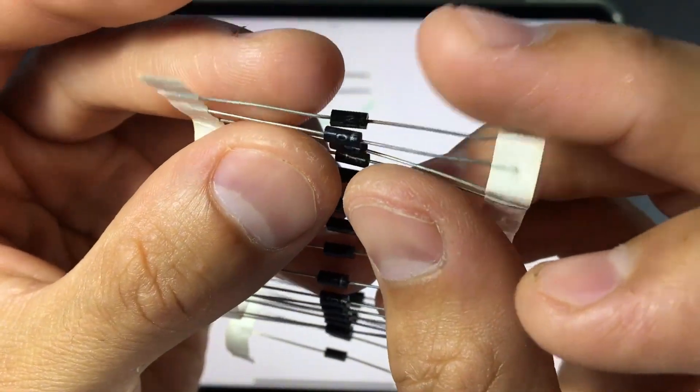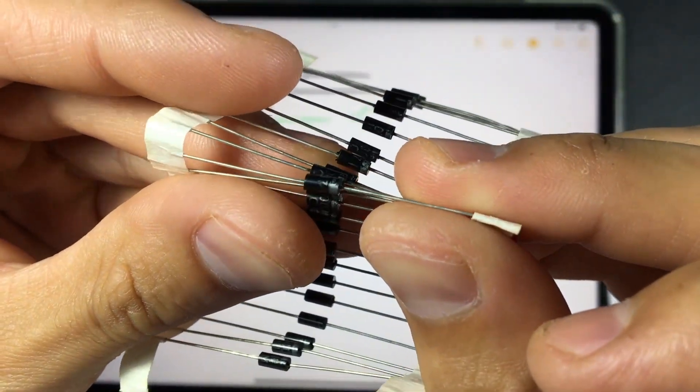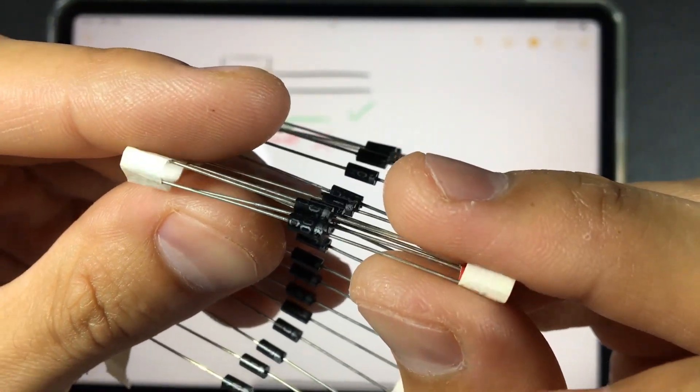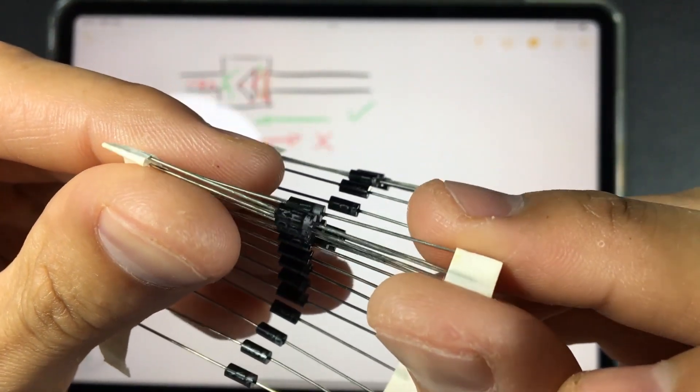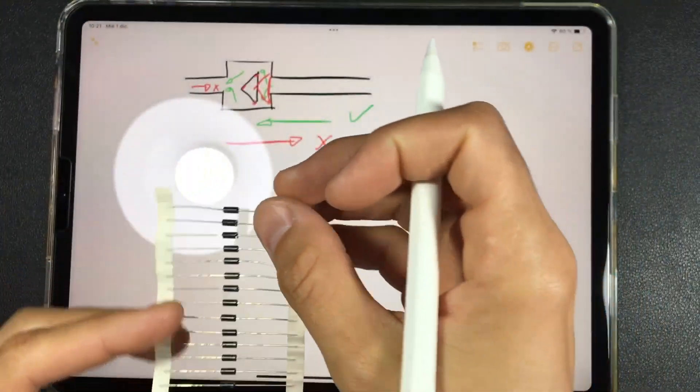It is a component that we clearly see a gray strip on one side and the other side is broader and black with a number that indicates the different characteristics of the diode. But, well, there is a difference on one side and on the other.